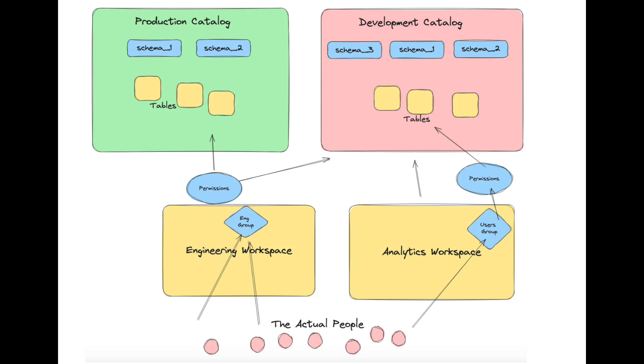You need to think about which workspaces have access to which catalogs, what permissions those workspaces carry, and who your different groups of people are. Maybe you have groups for engineering, analytics, and data science. How do those groups interact with workspaces, and specifically with the catalogs, schemas, and objects inside them? For example, maybe analysts only have view access to prod, while engineers can modify tables in prod.